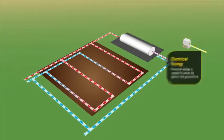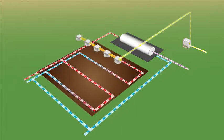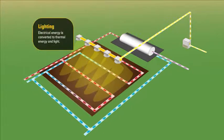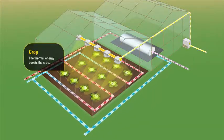Powering the lights in the greenhouse requires electrical energy. The electrical energy is then converted into thermal energy and light, and the thermal energy created is used to boost the crop.